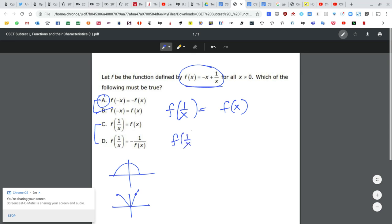So f of 1 over x is basically negative 1 over x. Just that guy.